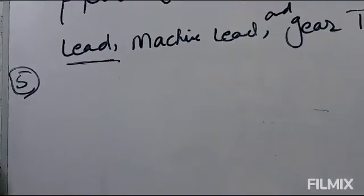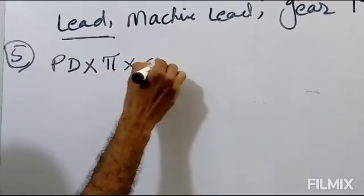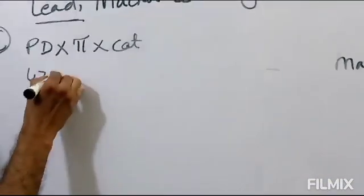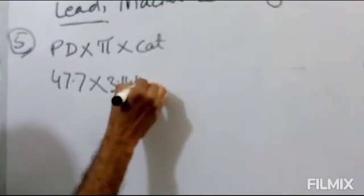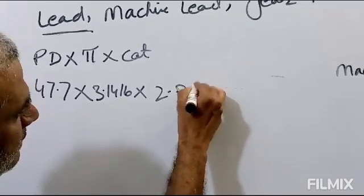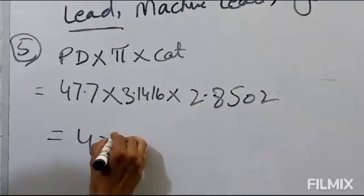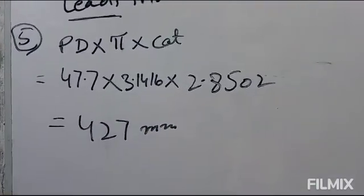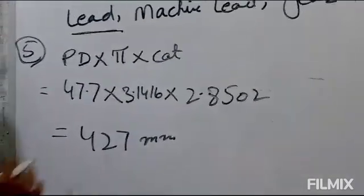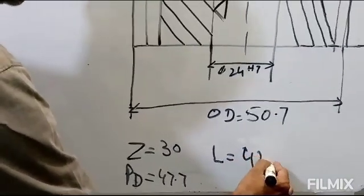Lead formula: Lead = PD × π × cot(beta). PD = 47.7 mm. Pi value is known. Cot(19 degrees 40 minutes) = 2.8502. When we calculate this: Lead = 47.7 × π × 2.8502 = 427 mm.